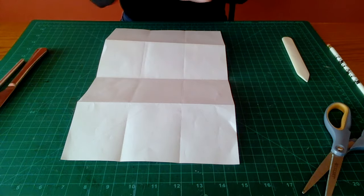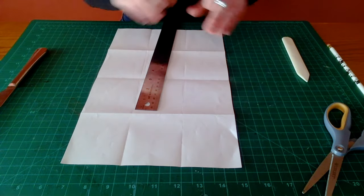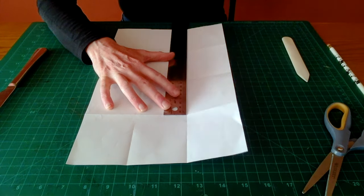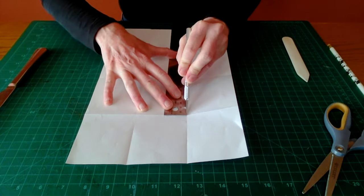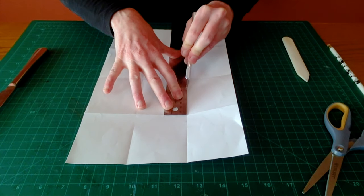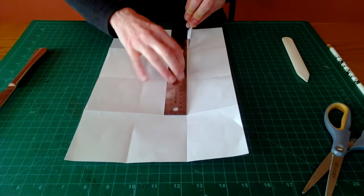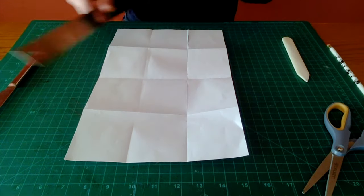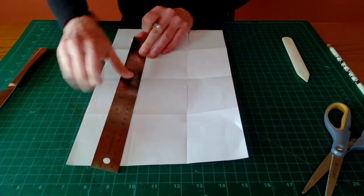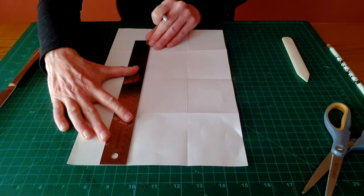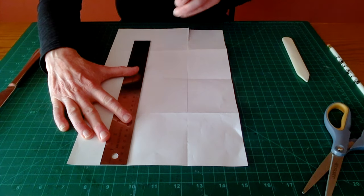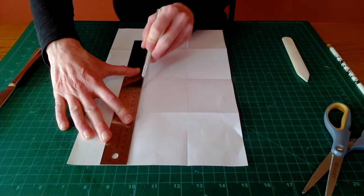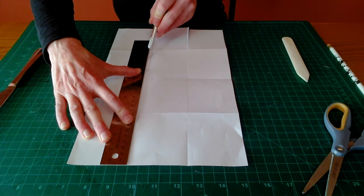Next we're going to take scissors or a craft knife, and we're going to cut from the bottom of your first column along the fold until you get to that very top square. And then on the last column, you will cut from the top of your column down to that bottom square.